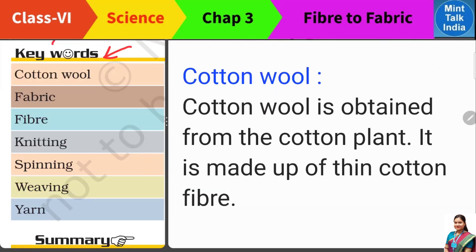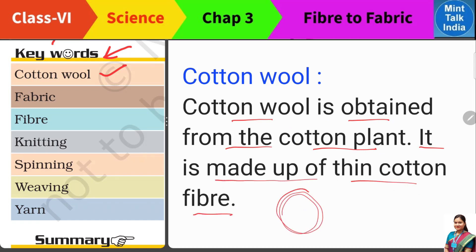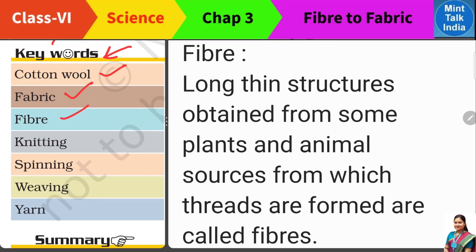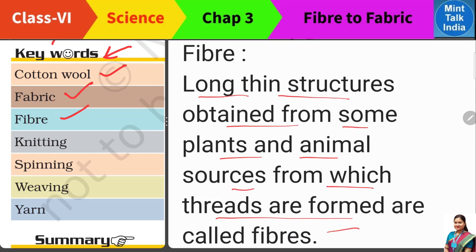Let us see the keywords now. The first word is cotton wool — cotton wool is obtained from the cotton plant, it is made up of thin cotton fibers. तो जो रुई का एक बड़ा सा टुकड़ा हमारे घर पे रहता है, उसी को हम cotton wool कहते हैं। What is fabric? A woven material — एक ऐसा material जो weave करके तैयार होता है — which is also called a cloth, is called a fabric. What are fibers? Fibers are long, thin, narrow structures which are obtained from some plant and animal sources, from which threads are formed — and they are called fibers.